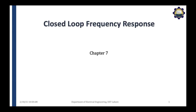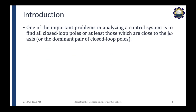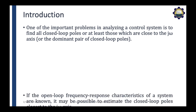In this video we will discuss the closed loop frequency response from Chapter 7 of your textbook. One of the important problems in analyzing a control system is to find all the closed loop poles, or at least those poles which are close to the j-omega axis, which are called the dominant pair of the closed loop poles. We are interested in these poles because the stability of the system depends upon their position, and if they are close to the j-omega axis, a slight change in the gain in the loop can cause instability. So the position of the closed loop poles close to the j-omega axis is important information because with that we can determine and examine the stability of the system.